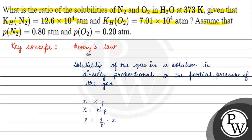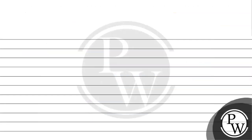Now this (1/k') is basically the Henry's Law constant, which we denote as KH. So KH into x gives us the partial pressure of the gas. Here we are given the partial pressure of the gas and the Henry's Law constant value, so we can calculate the solubility of nitrogen and oxygen.